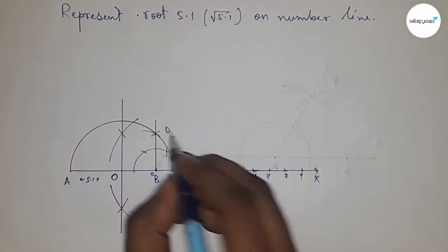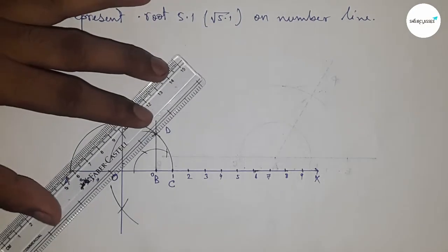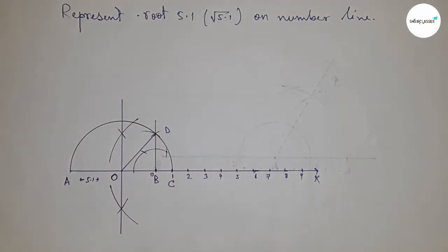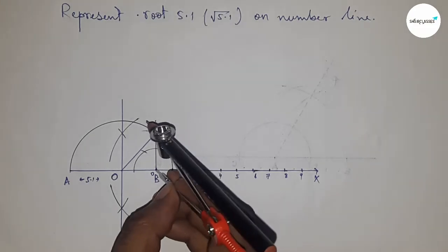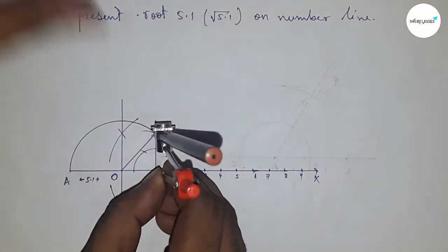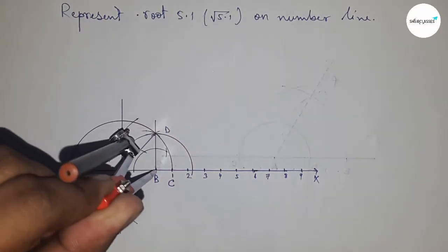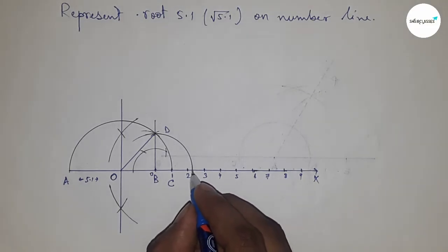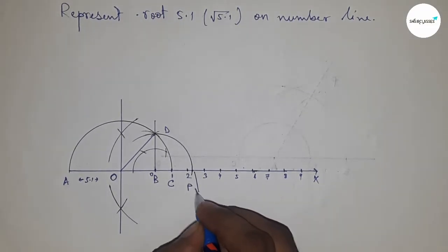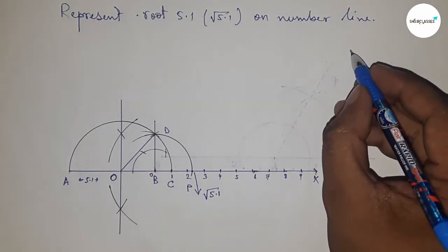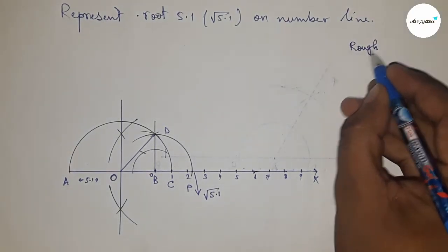Join O and D, which is the radius of the semicircle. Now take the length BD by compass and draw an arc which cuts the number line at point P. This is the representation of √5.1 on the number line.